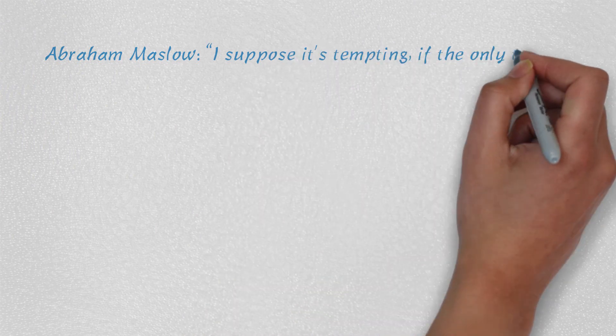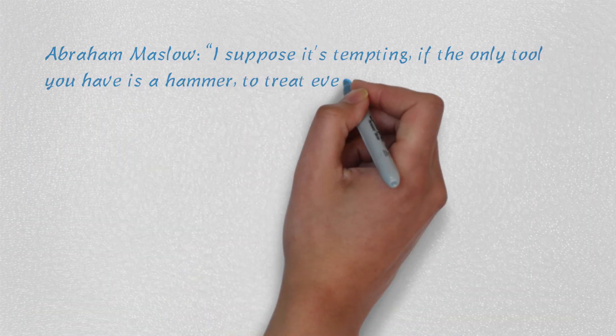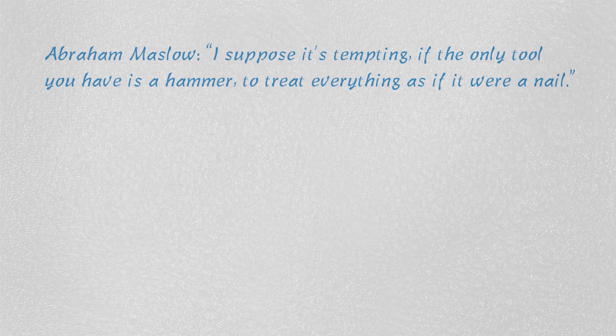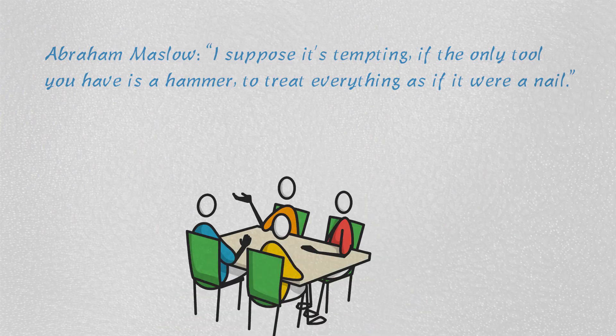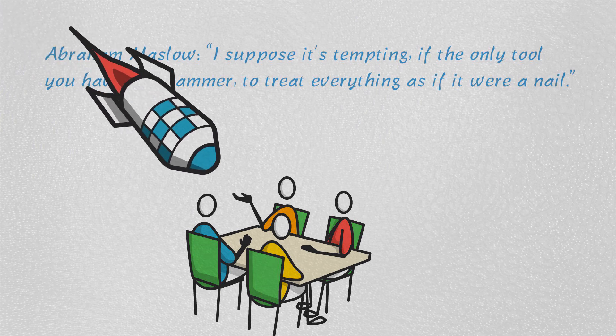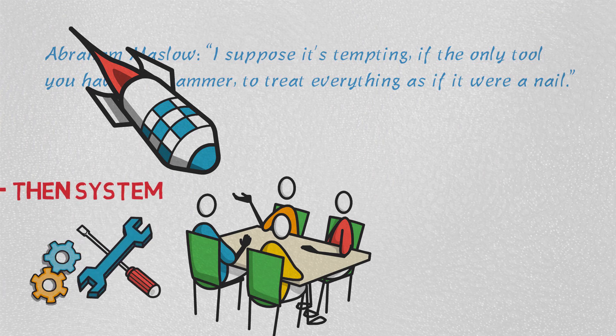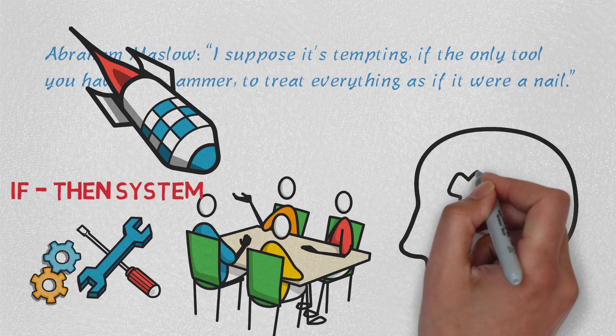Abraham Maslow said, 'I suppose it's tempting, if the only tool you have is a hammer, to treat everything as if it were a nail.' That's why many experienced people shut down innovative ideas, because by definition innovation is new and unique, and new and unique is incompatible with the traditional 'if-then' system our brain is hardwired to.